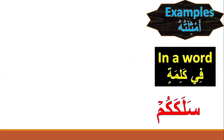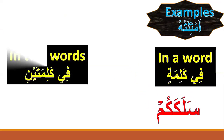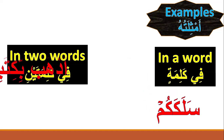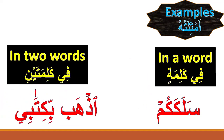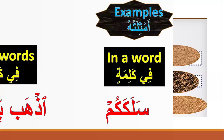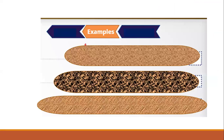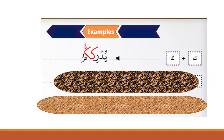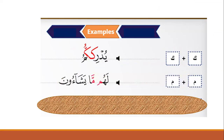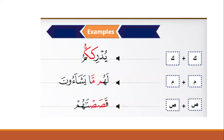Examples of mutamathilan occur in one word as well as in two words, such as in various Quranic phrases where identical letters appear consecutively.